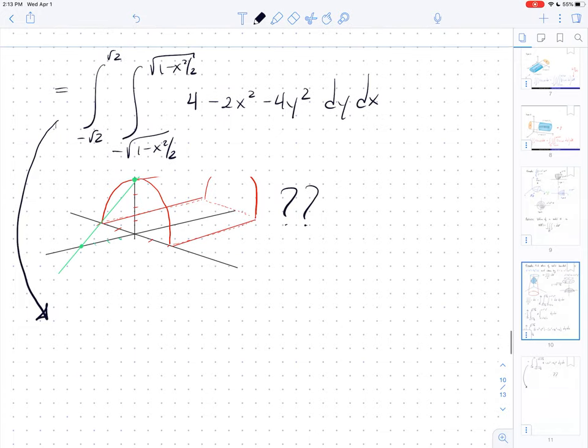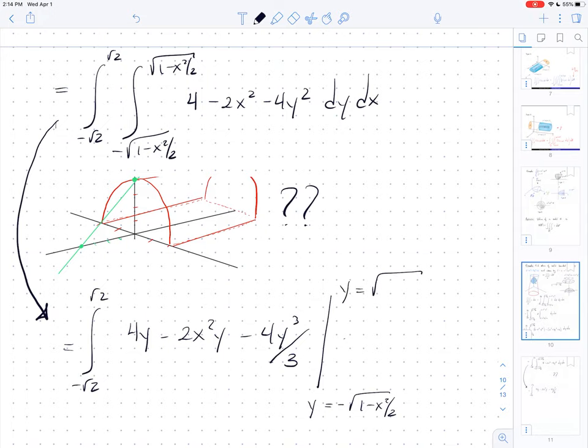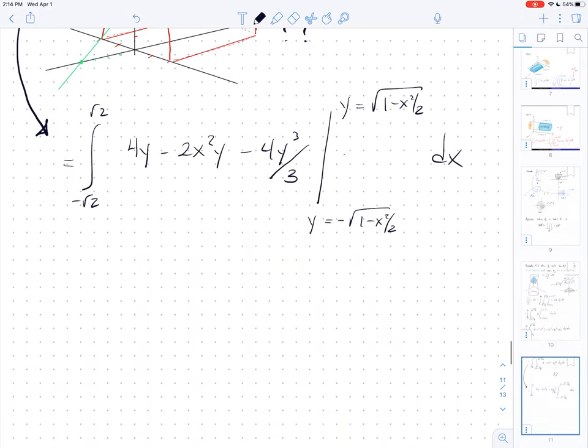Now I'm going to integrate with respect to y, and I get 4y minus 2x squared y minus 4y cubed over 3, evaluated from y equals negative square root of 1 minus x squared over 2 to the positive square root. I can plug these things in and simplify. When you clean everything up, you're going to end up with negative root 2 to root 2 of 2 minus x squared radical 4 minus 2x squared dx. I would encourage you to pause the video and work that out.